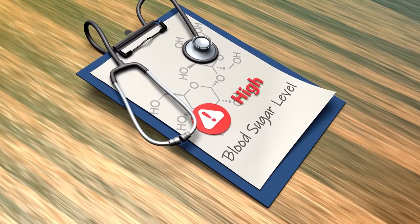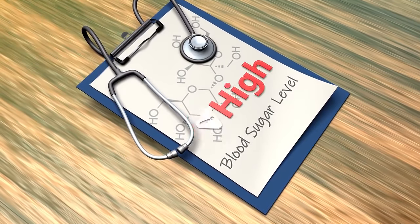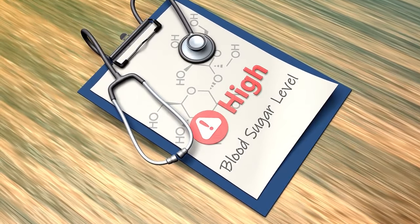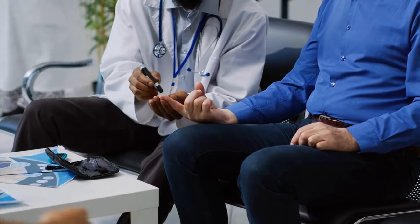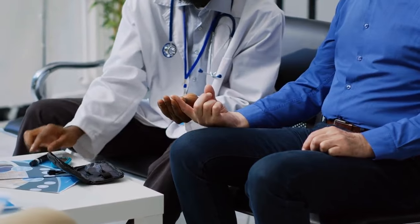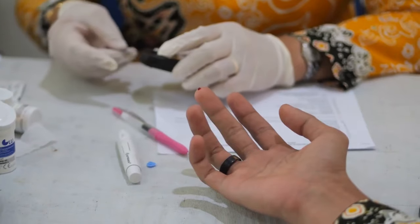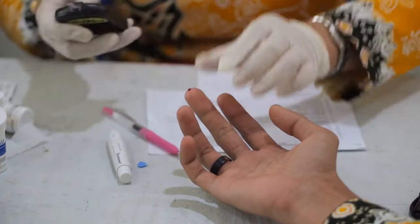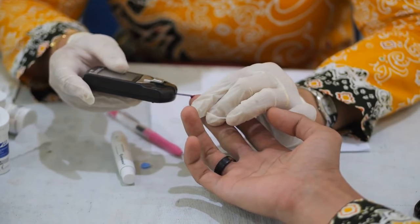Type 2 diabetes, more common than type 1, this form of diabetes is largely the result of excess body weight and physical inactivity. Here, the body either resists the effects of insulin or doesn't produce enough insulin to maintain normal glucose levels. Type 2 diabetes can sometimes be managed through lifestyle changes, oral medications, and in some cases, insulin.